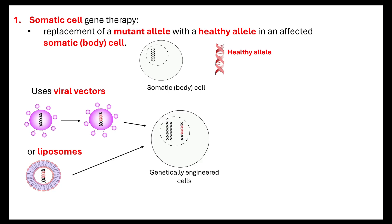We genetically engineer these somatic body cells by replacing a mutant allele through the insertion of a healthy allele. If both a non-functional protein and a functional protein are present, the functional protein is the one that will carry out the necessary role within the cell. By inserting the healthy allele, we cause protein synthesis — the transcription and translation — of a functional protein.